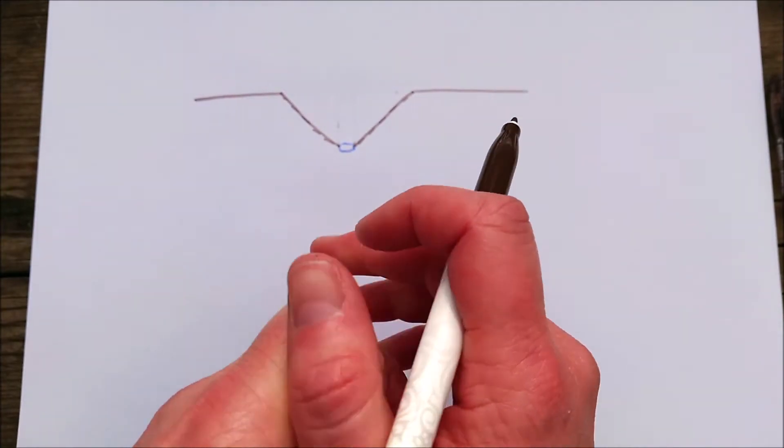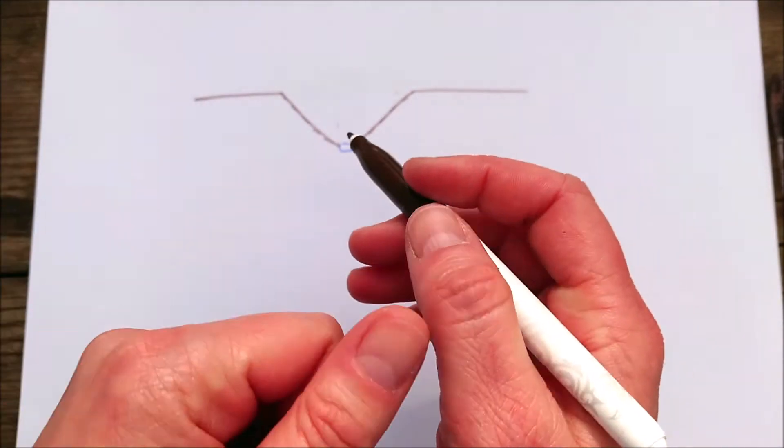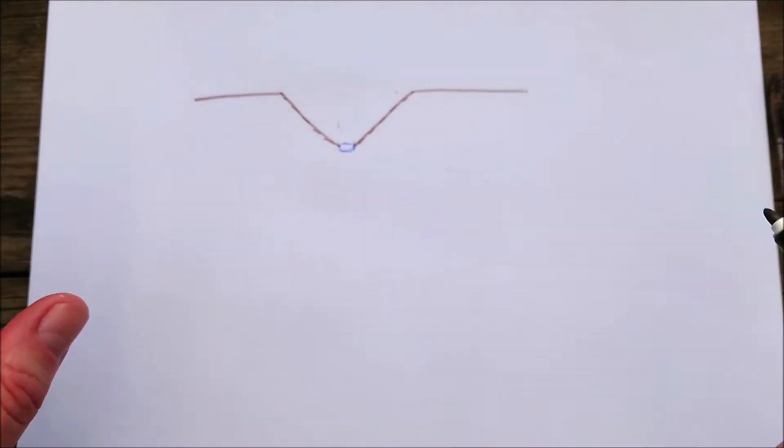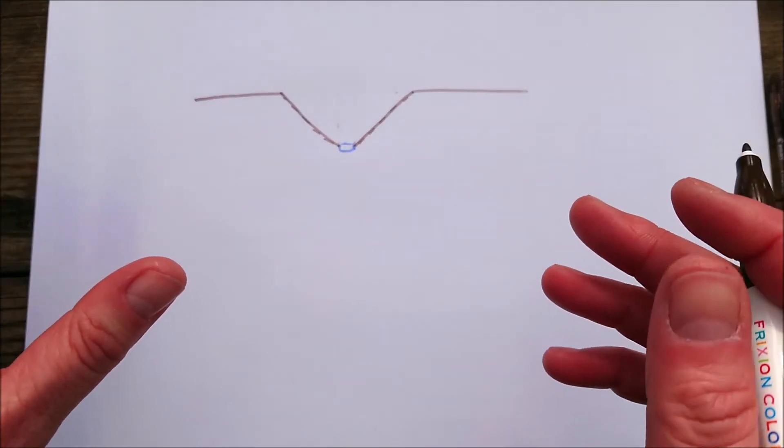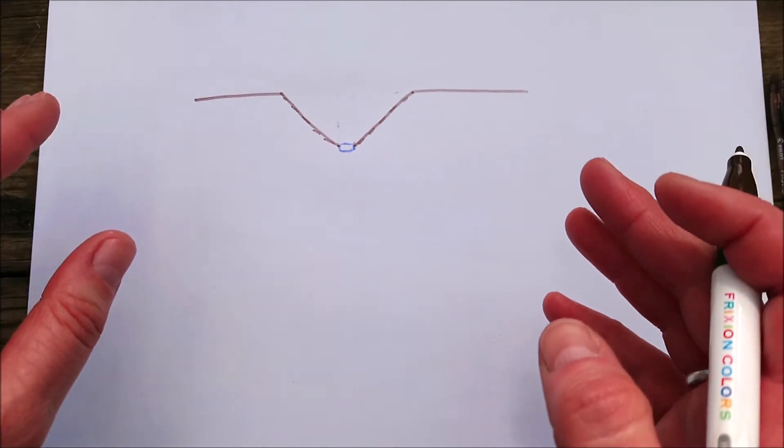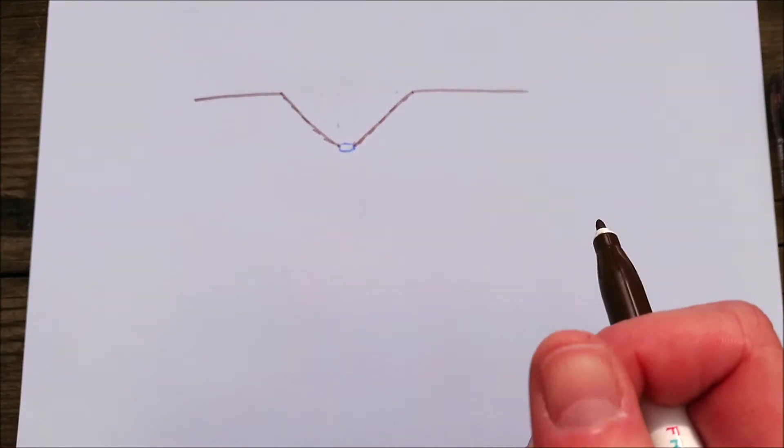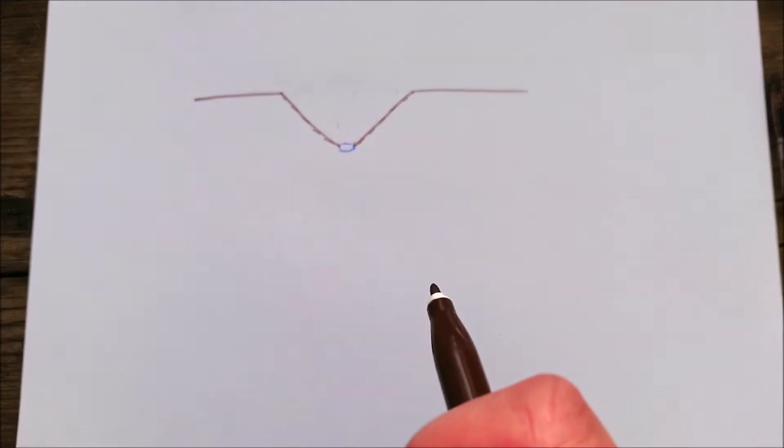Now where you've got V-shaped valleys, you also get something called interlocking spurs. Now with interlocking spurs, it's a process whereby the V-shaped valley creates a series of spurs or bits of land that stick out.